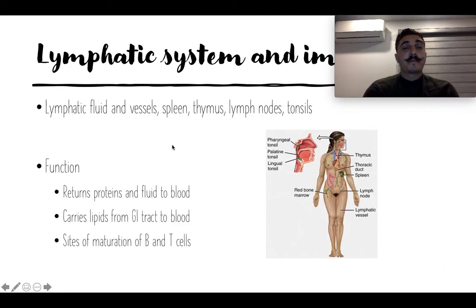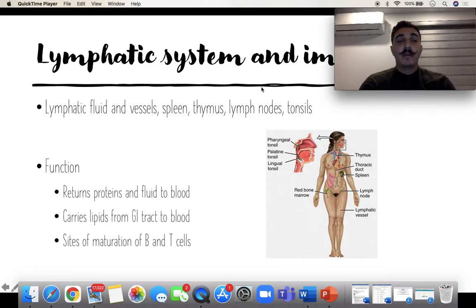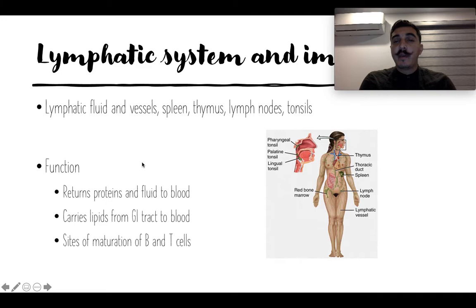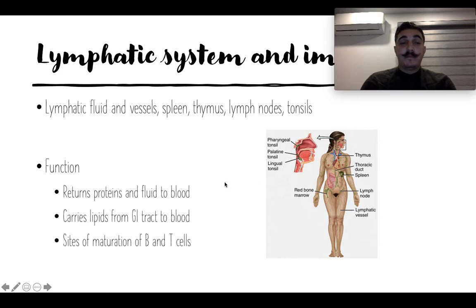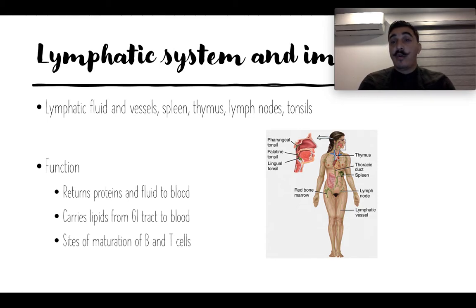The lymphatic system, or immunity, includes the lymphatic fluid and vessels, the spleen, the thymus, the lymph nodes, and tonsils. Their main function is to return proteins and fluid to the blood. They also carry lipids from the GI tract into the blood. This is mainly where we get our B and T cells to fight immunity — like fighting COVID right now. So it's our main immune system.